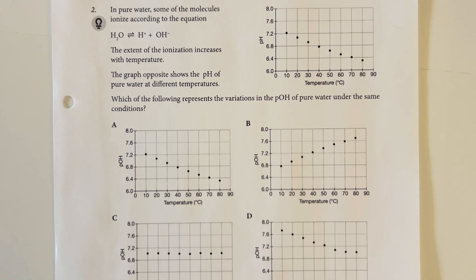In pure water, some of the molecules ionize according to the equation below. The extent of the ionization increases with temperature. The graph opposite shows the pH of pure water at different temperatures. Which of the following represents the variations in pOH of pure water under the same conditions?